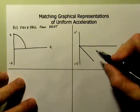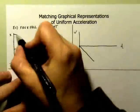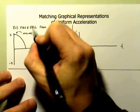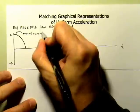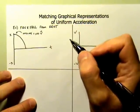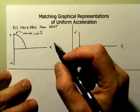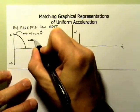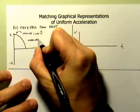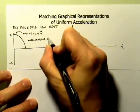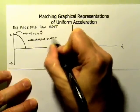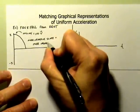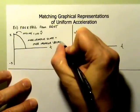And of course, just to remind you, what we saw here was no slope equals no velocity. More negative slope equals more negative velocity.